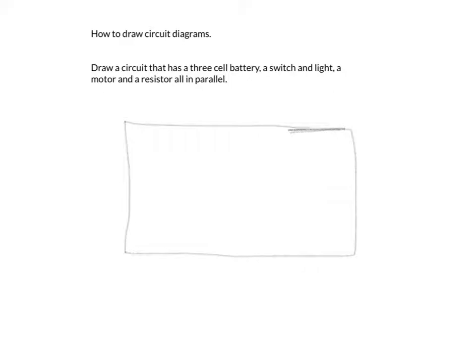Let's do the three-cell battery: short line, long line, short line, long line, short line, long line. There are my three cells for a battery — one, two, and the third one. A short and long pair is one cell.